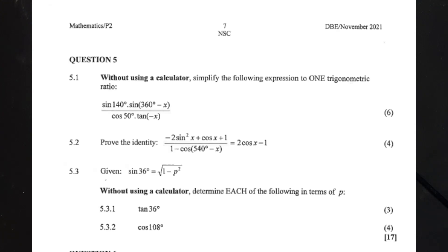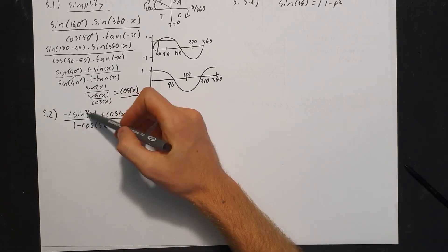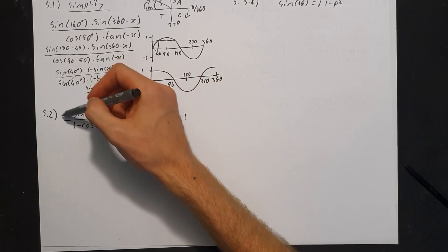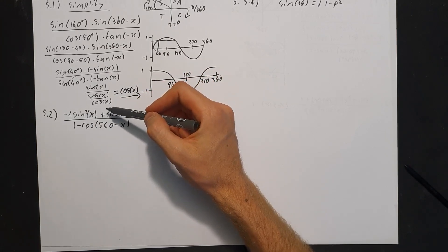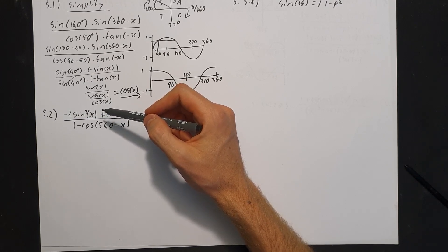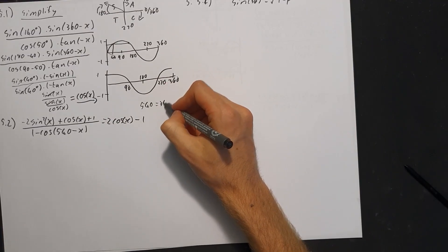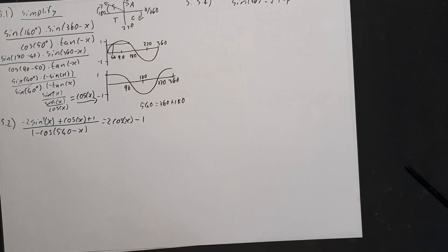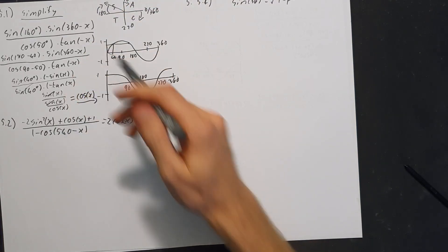Question 5.2 asks you to prove the identity: (negative 2 sine squared x plus cos x plus 1) over (1 minus cos of (540 minus x)) equals 2 cos x minus 1. Note that 540 equals 360 plus 180, placing us in the second quadrant. So cos of (540 minus x) becomes negative cos of x, meaning the denominator becomes 1 minus (negative cos x), which is 1 plus cos x.